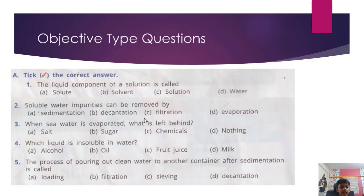Objective Type Questions A. Tick the correct answer. The liquid component of a solution is called solvent. Soluble water impurities can be removed by evaporation. When sea water is evaporated, what is left behind? Salt. Which liquid is insoluble in water? Oil. The process of pouring out clean water to another container after sedimentation is called decantation.